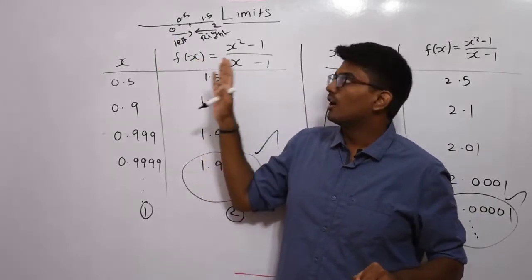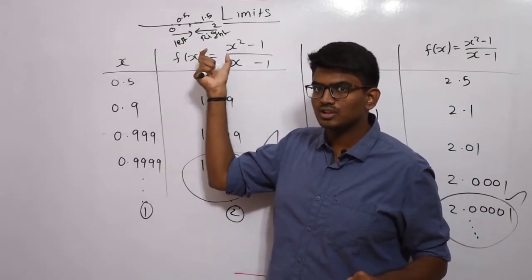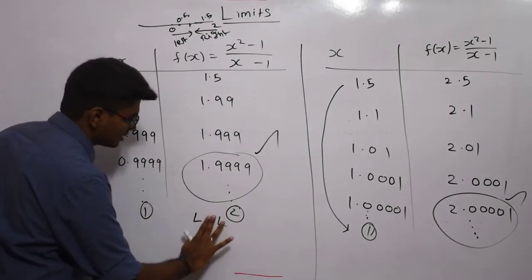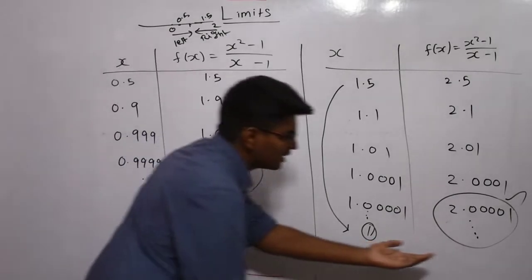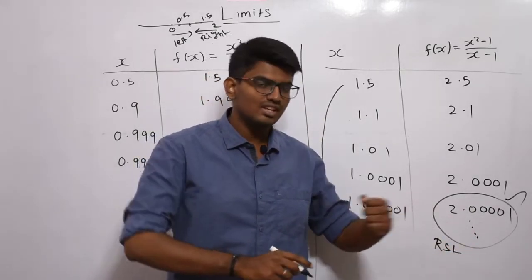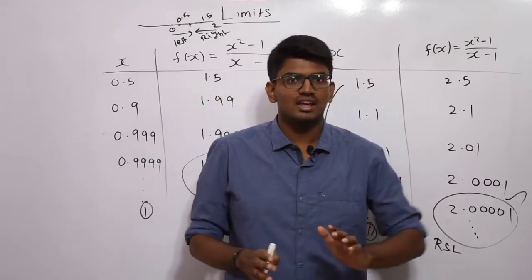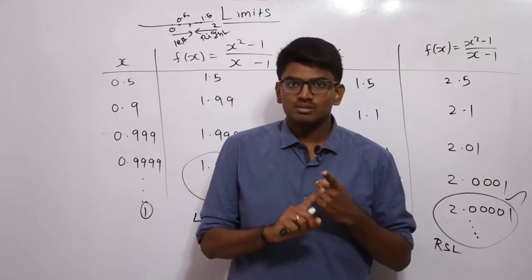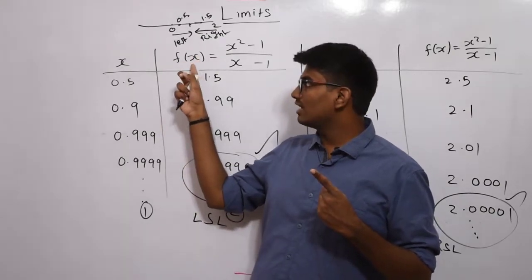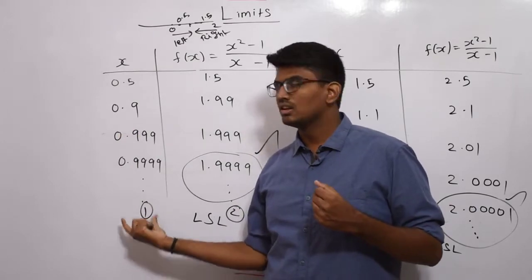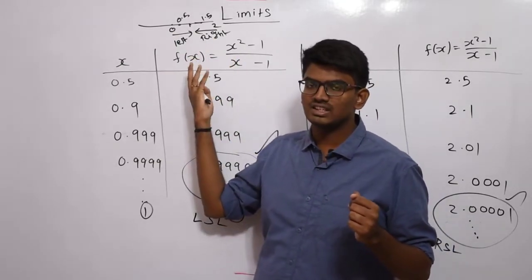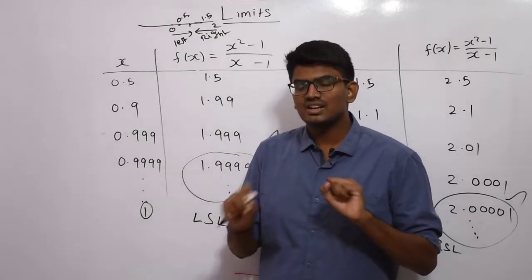Left hand side limit and right hand side limit, both should be same. If both are same, then we can consider that the limit exists. If both are not same, then we cannot say that the limit exists. Simply: limits are nothing but the value that f(x) approaches when x becomes closer and closer to a given value — from either the left hand side or the right hand side.